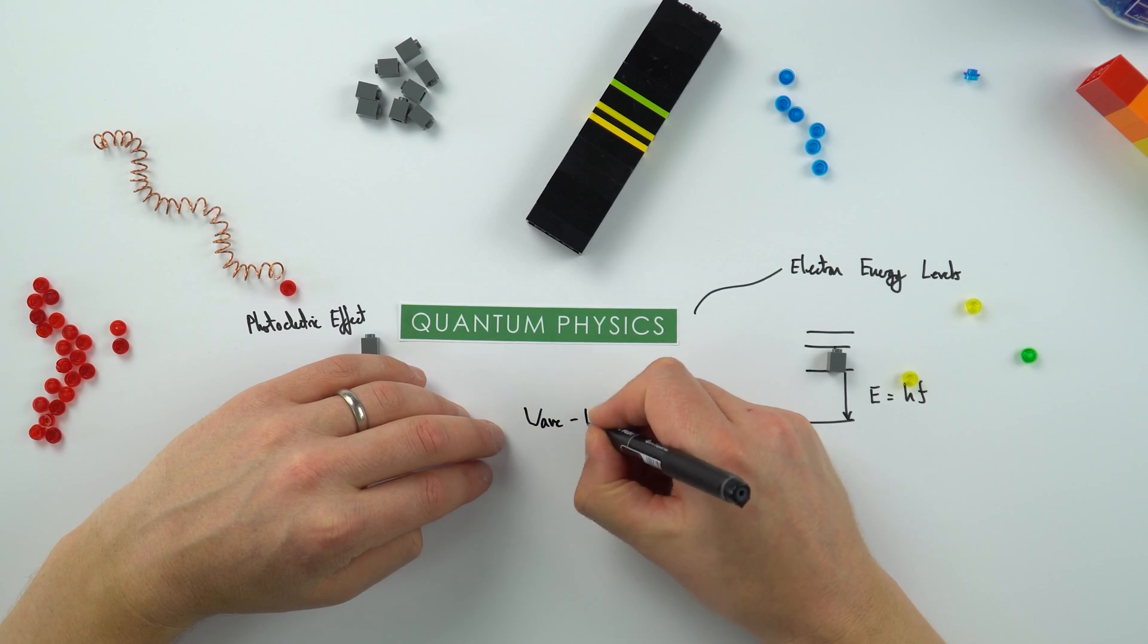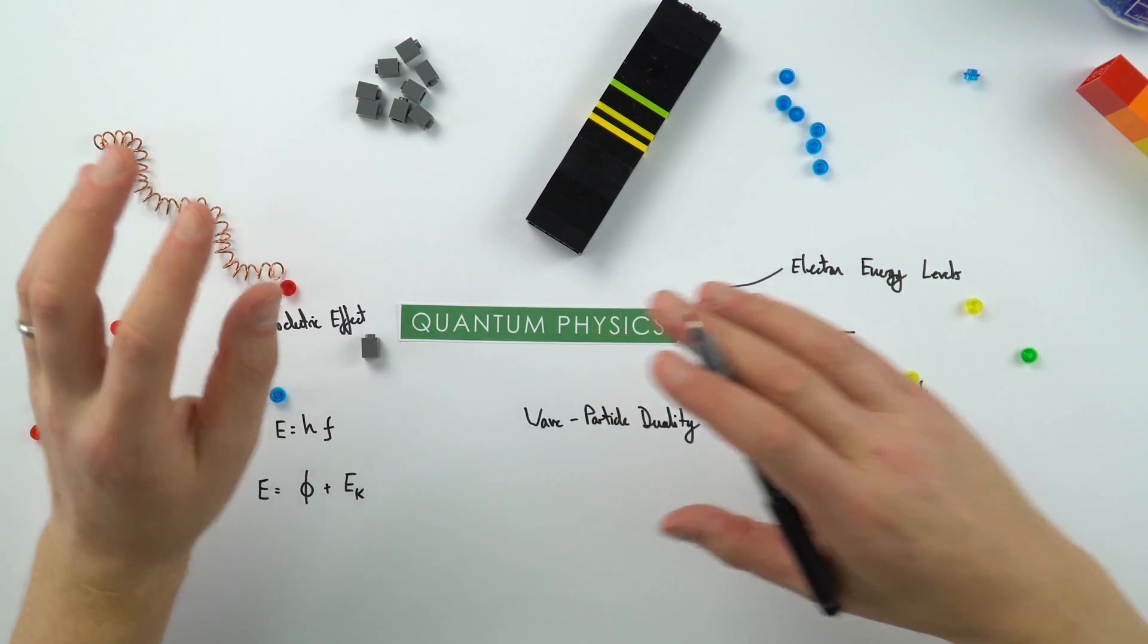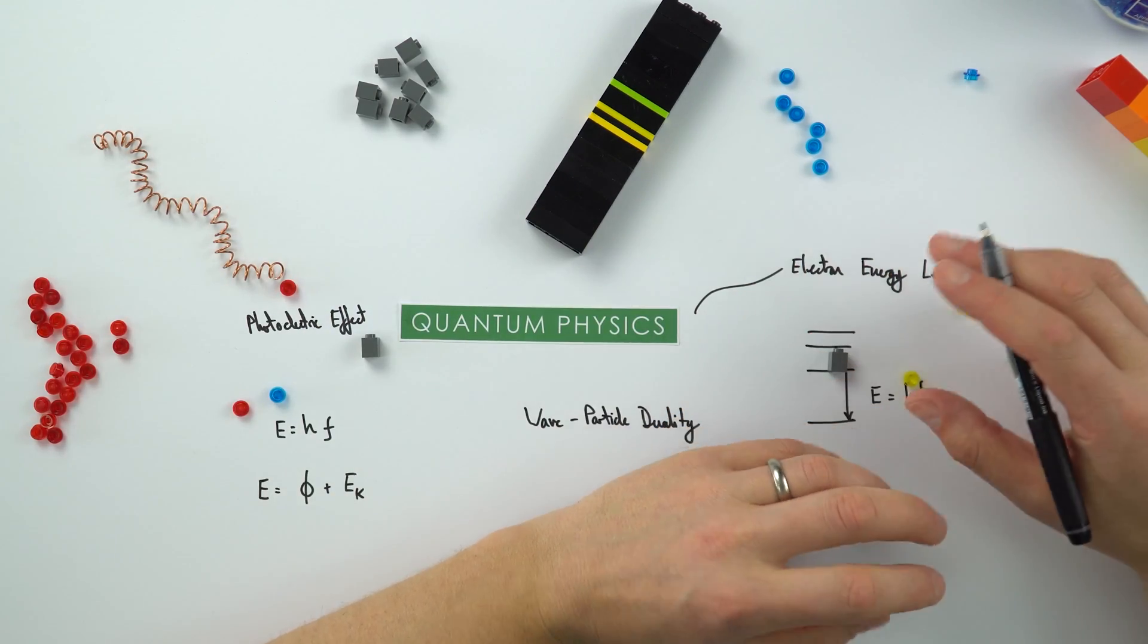We have something called wave-particle duality, and basically what this means is that the wave model on its own isn't enough and the particle model on its own isn't enough. And we actually combine the two to think about how things behave in real life. So sometimes things appear to behave as a wave - if we're thinking about light, it can refract, it can diffract, and that's wave-like behavior. But light also behaves like a particle, which explains the photoelectric effect.